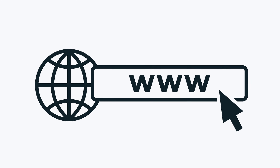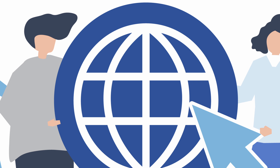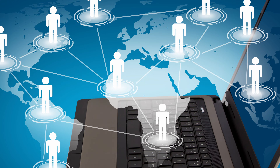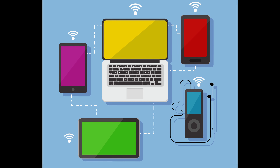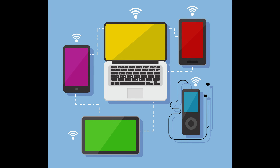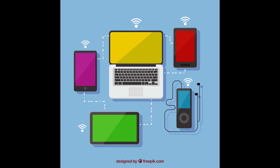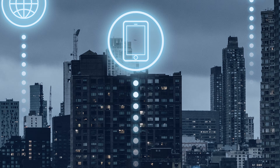Before understanding the web we should understand the internet, because the web is part of the internet. Internet is a network of networks. A network is a group of connected devices like computers, phones, or servers that communicate and share information — just like we can send messages or do video calls.